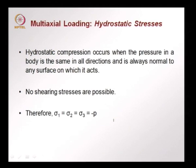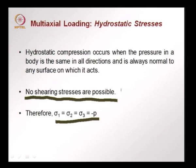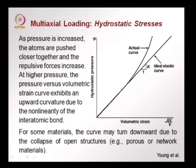In the case of hydrostatic compression, the pressure on the body is the same in all directions — always normal to any surface on which it acts. So σ1, σ2, σ3 are all equal to −p, and therefore no shearing is possible. This means failure due to shearing will not occur under hydrostatic compression. This goes back to the Condon-Mores diagram: failure cannot occur under pure compression because atoms pushed together have very high repulsive forces. As hydrostatic pressure increases, the atoms are pushed together, repulsive forces increase, and at very high pressures the curve between hydrostatic pressure and volumetric strain curves upward. The slope of this line is the bulk modulus K. In some cases, if the material has many pores, these pores can collapse under very high hydrostatic pressure.